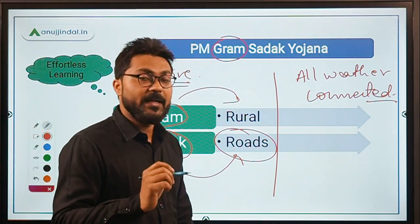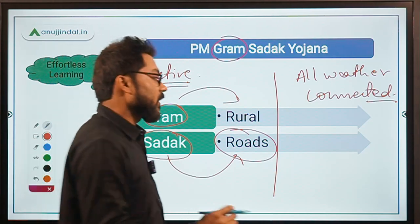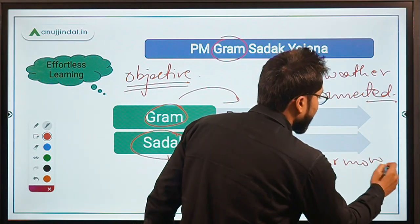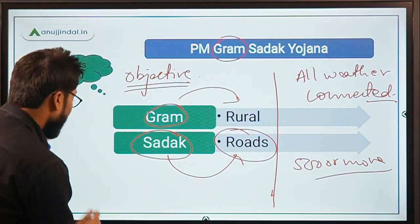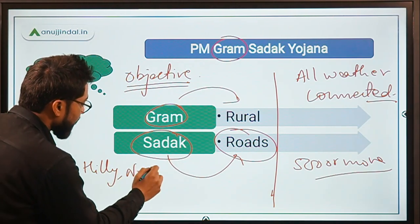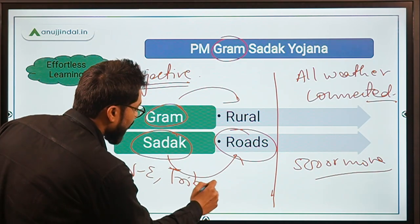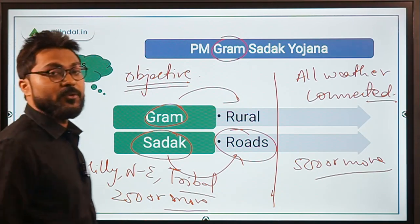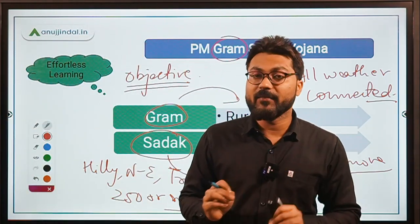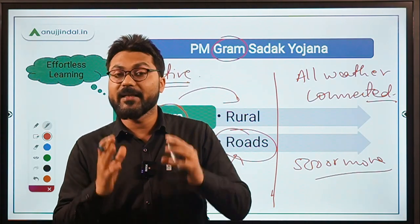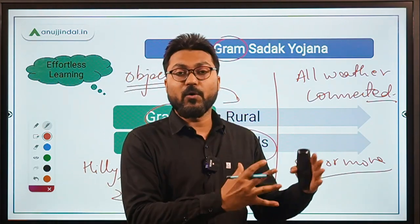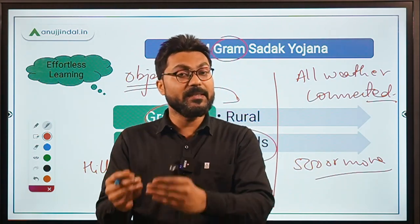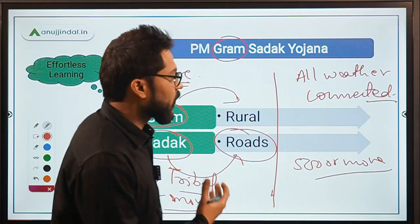The scheme provides all-weather connectivity to unconnected rural habitations. These rural areas should have a population of 500 or more in plain areas. For hilly areas, northeastern areas, or tribal areas, the population criteria is 250 or more. The objective of the scheme is clear.